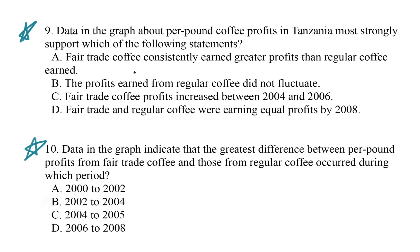These two questions we're going to do together, because they both ask about the graph but not the passage. Question 9 asks: data in the graph about per pound coffee profits in Tanzania most strongly support which of the following statements? And question 10 asks about the greatest difference between per pound profits from fair trade and regular coffee. Before we look at the questions, let's pop over to the graph and see if anything leaps out at us.